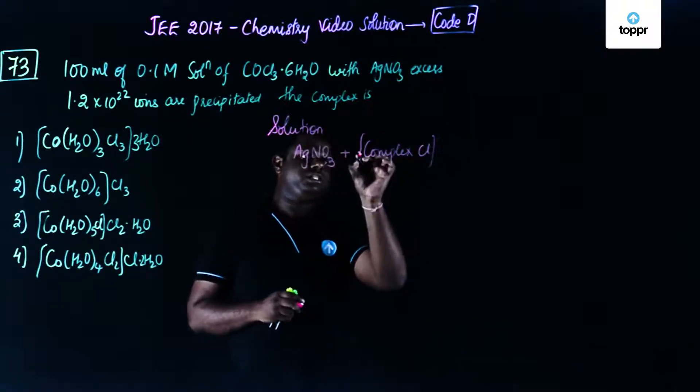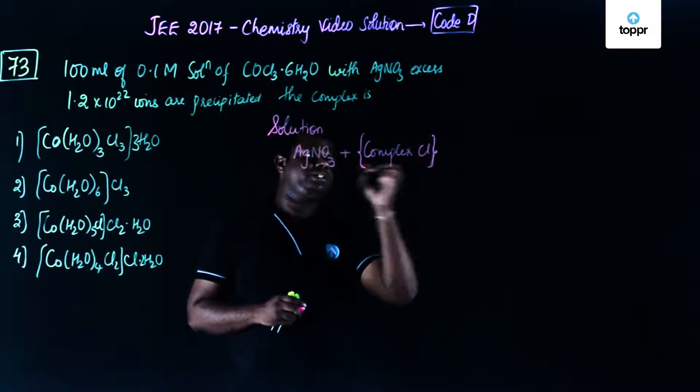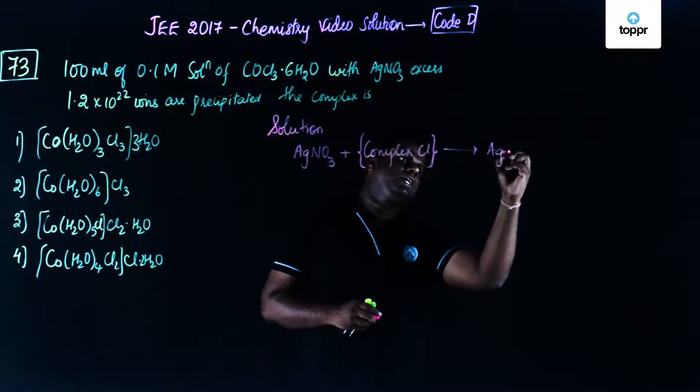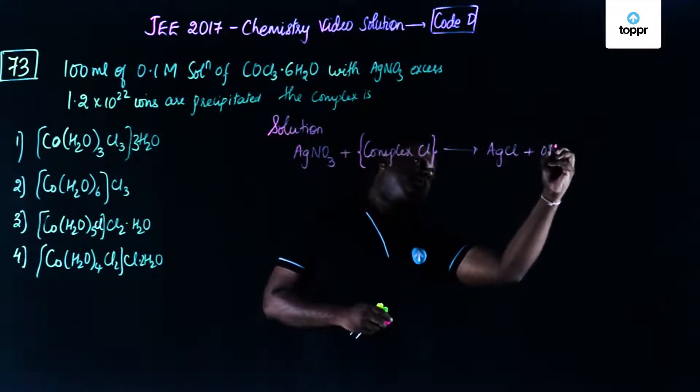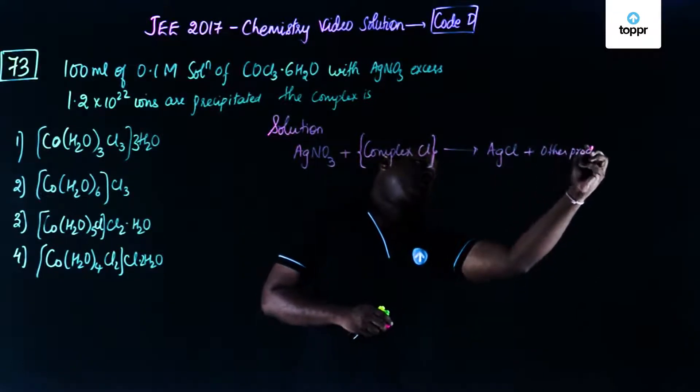and it forms AgCl plus other products, okay? And they have said that so many ions have got precipitated.